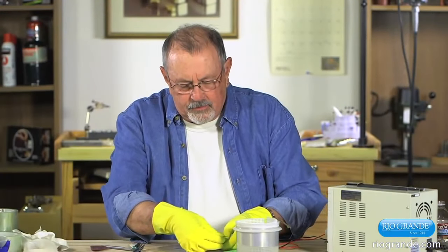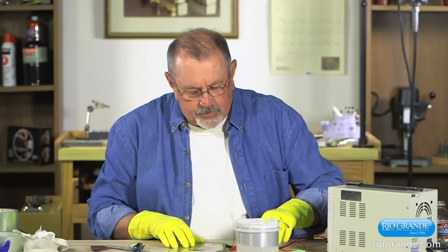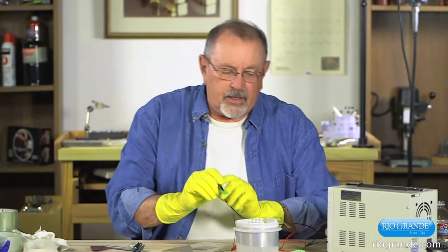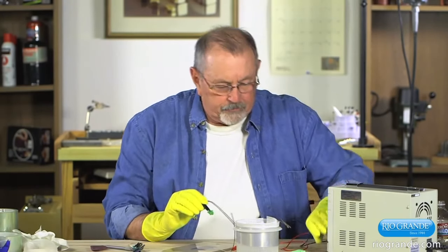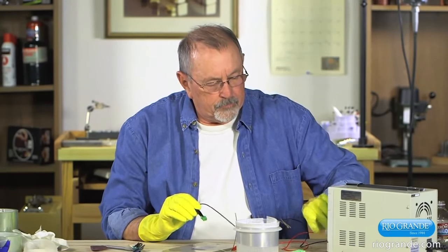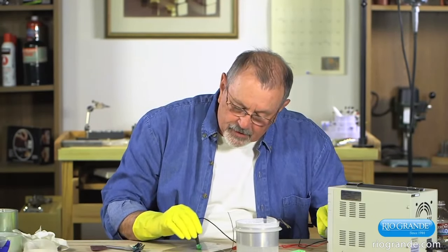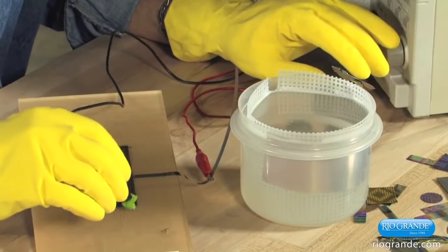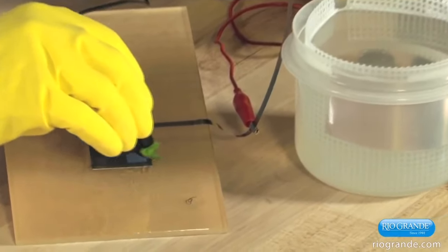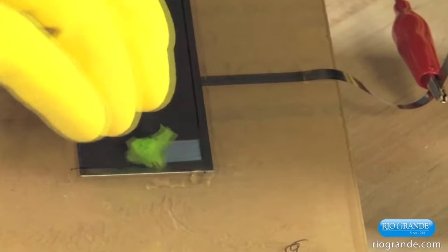I'm going to hook up the lead to the anode. I'm going to take my sponge, get it damp. Turn the anodizer down so I can start from scratch again. Apply the solution. And I'm going to start with about 20 volts and just paint that in.